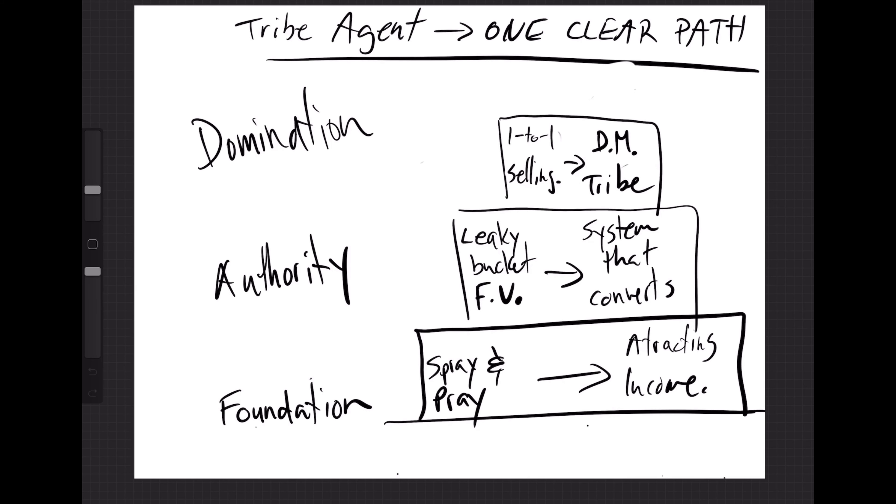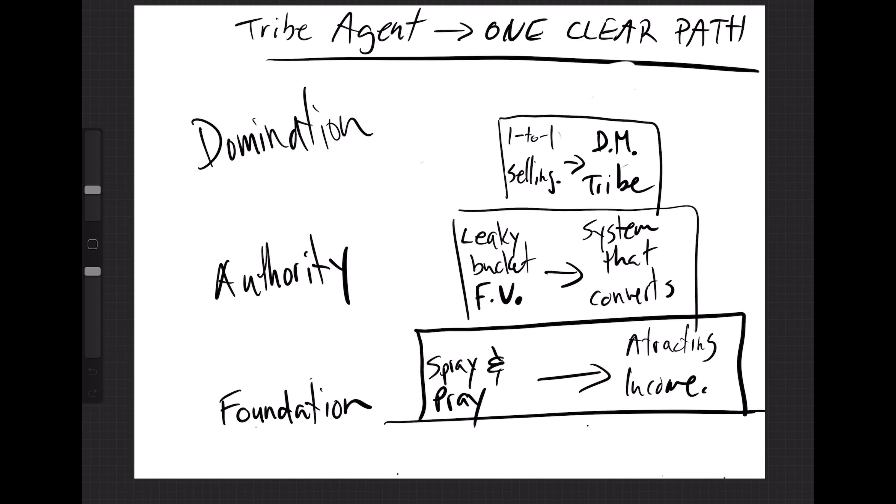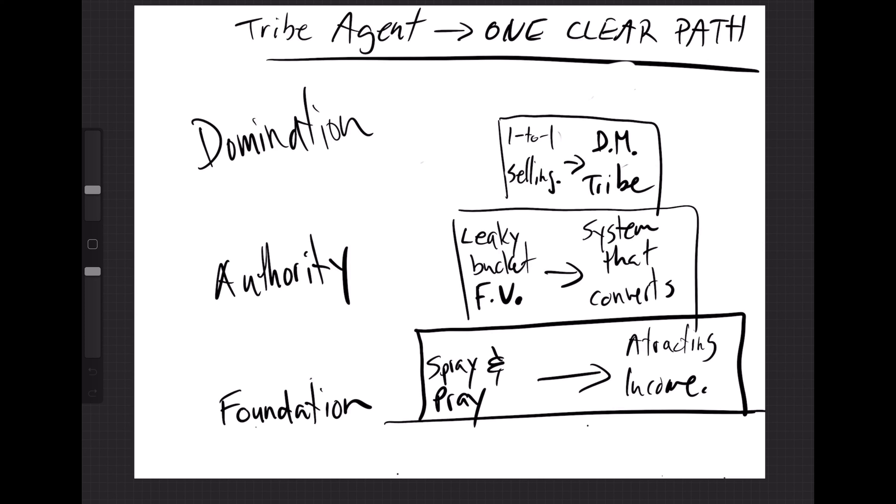The first step in the tribe agent system is the foundation. The foundation phase is designed to get you to go from spray and pray marketing to attracting income — that must be completed first. Once that is done, we move to authority. The authority stage is designed to get you to go from a leaky bucket follow-up system — most agents don't even have a system, just a bunch of yellow sticky notes — to a system that converts.